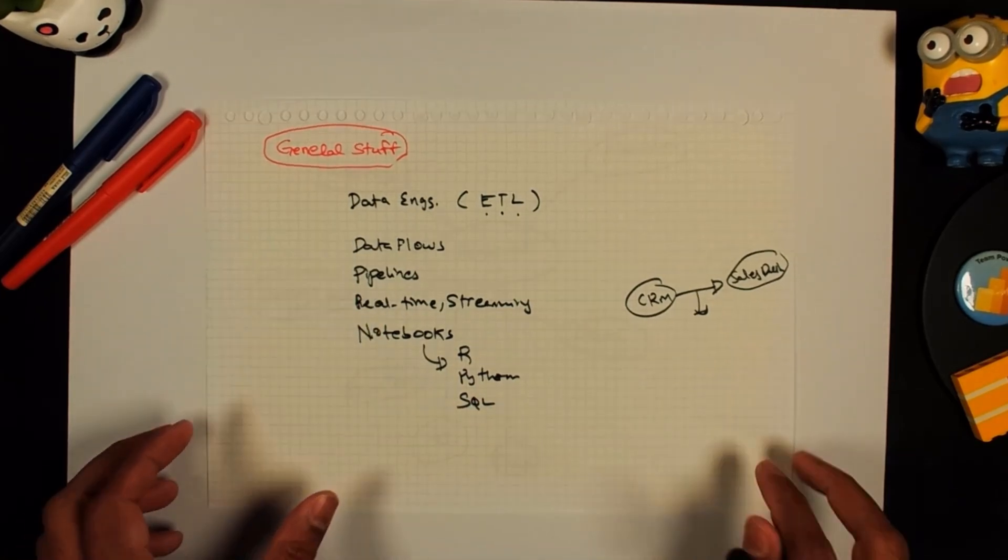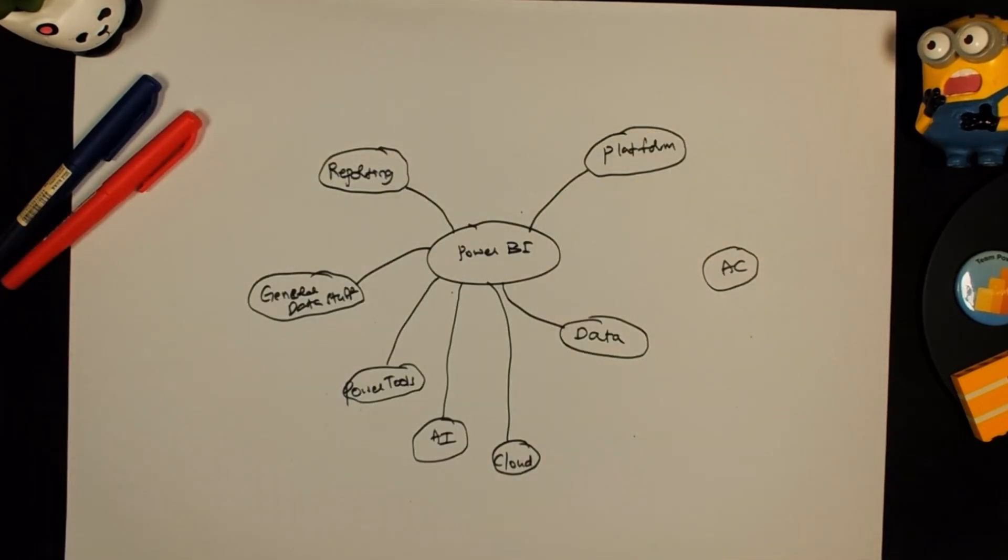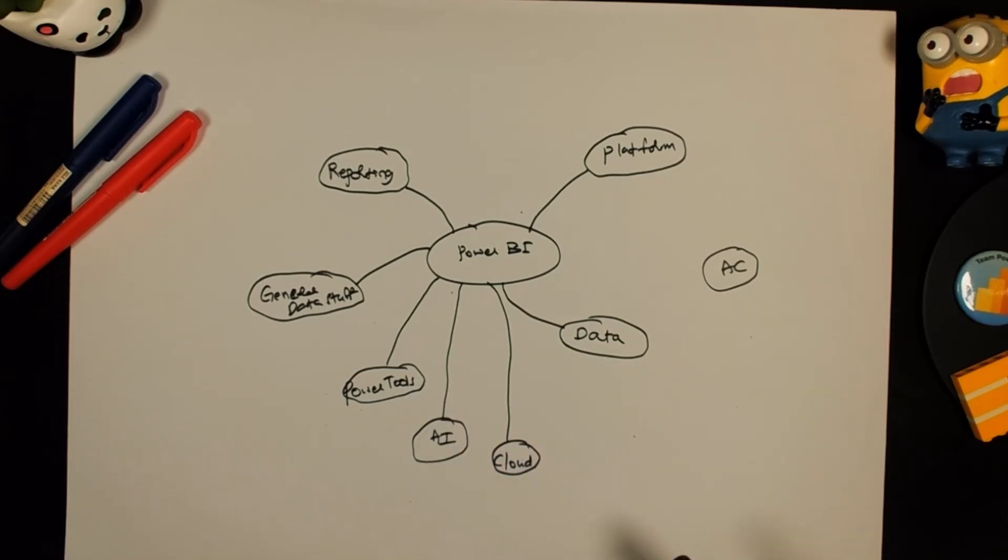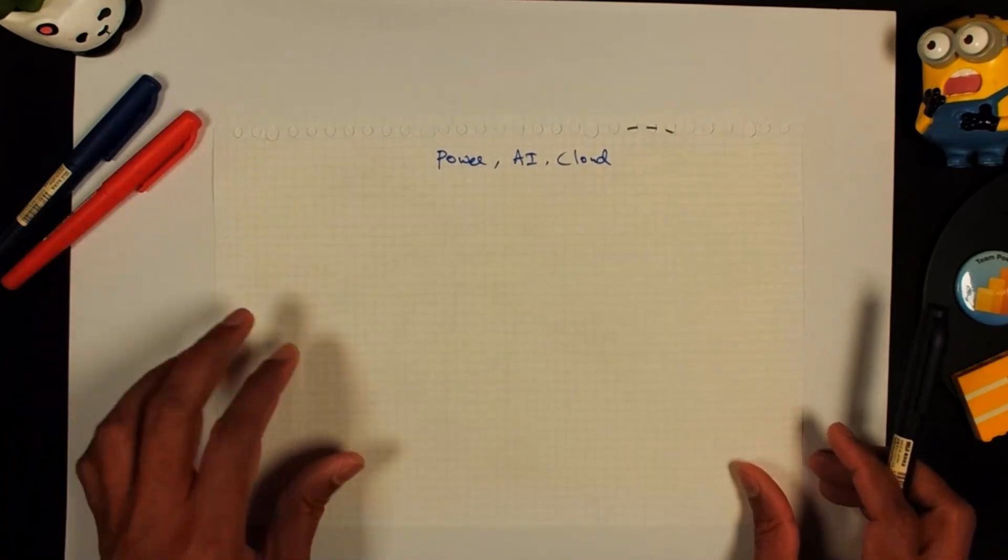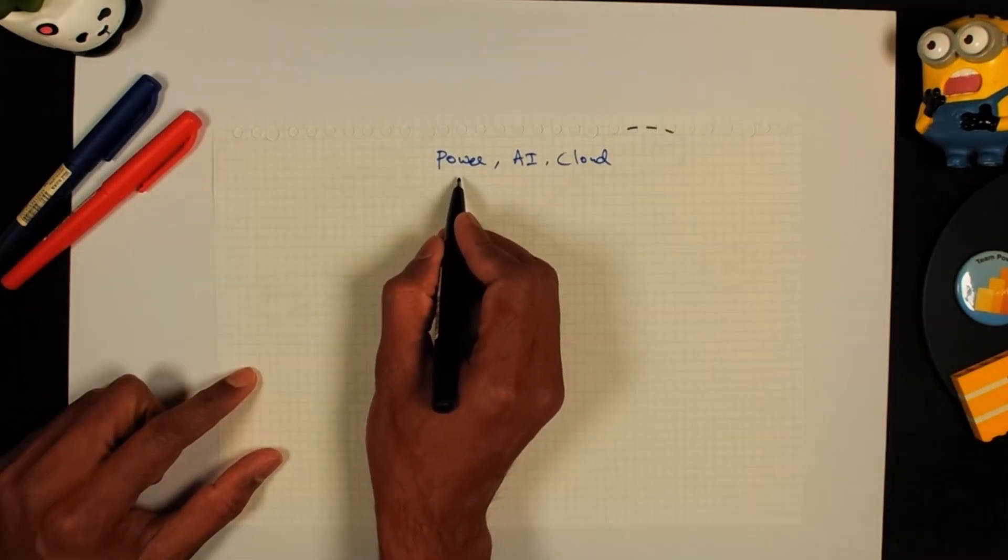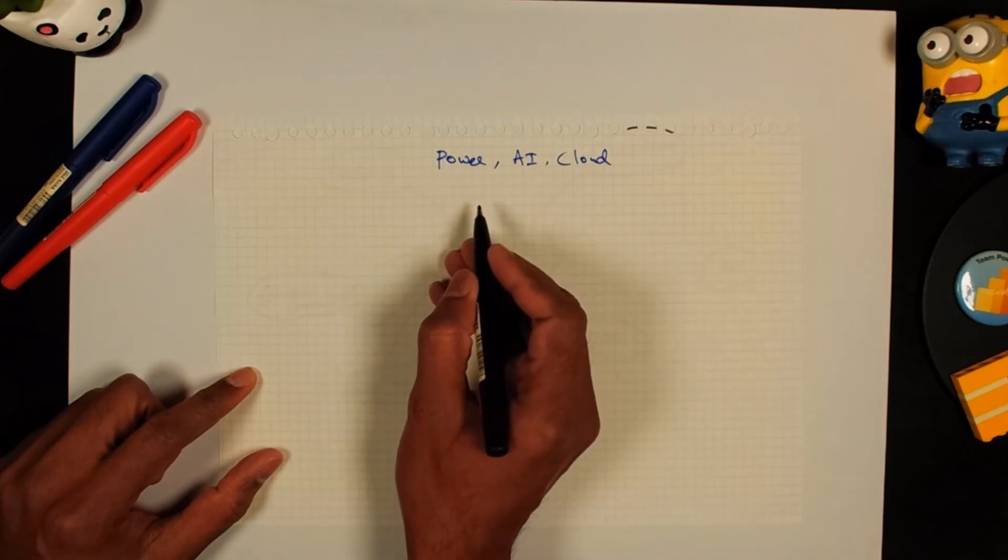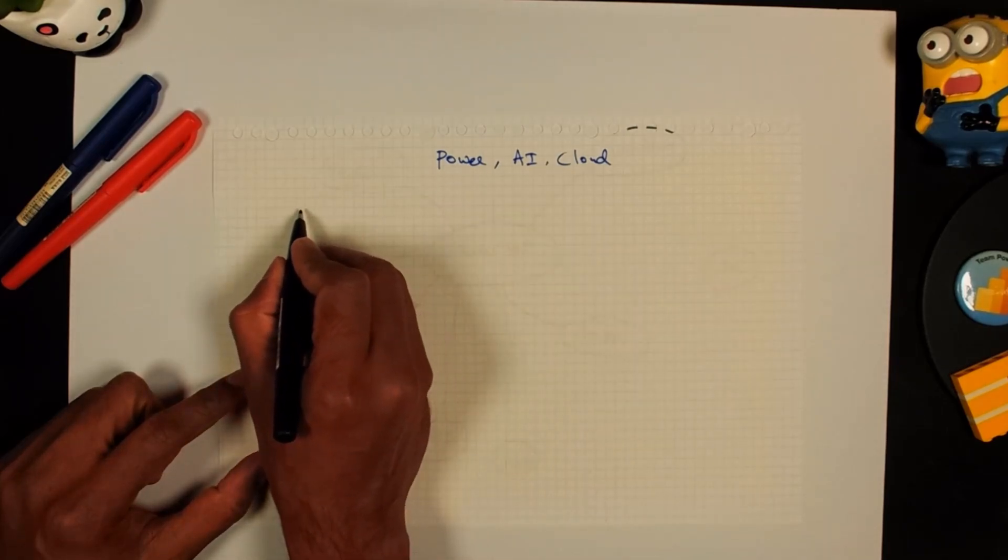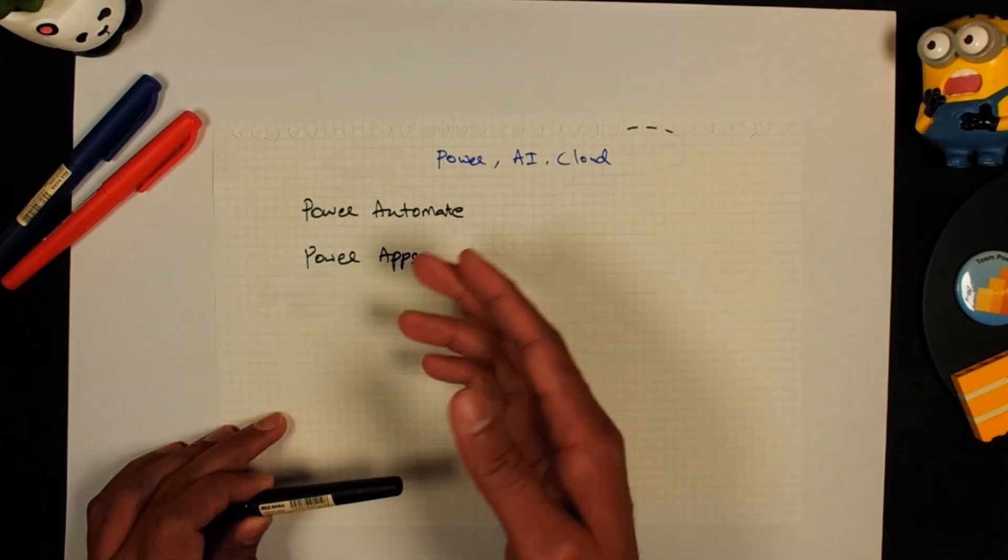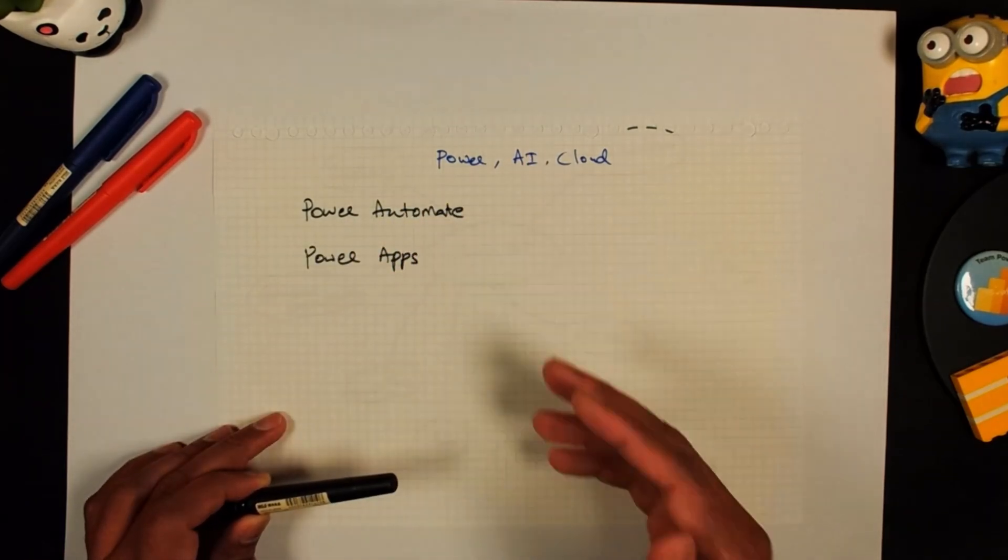Let's go to the next one. And that brings us to the last main area of Power BI, the power tools, AI and cloud related jargon. I put everything into one page so that we can cover everything in one go. The main power tools or power platform ingredients that you come across within Power BI are Power Automate and Power Apps. Of course there is also Power BI but we have covered that earlier.